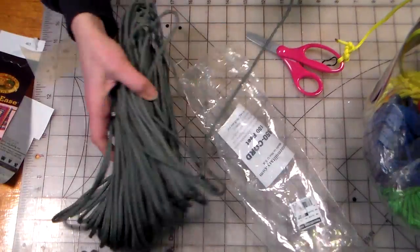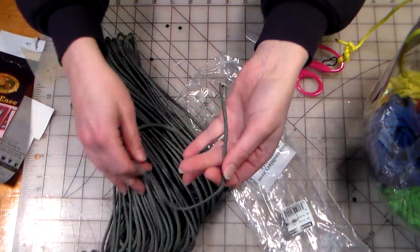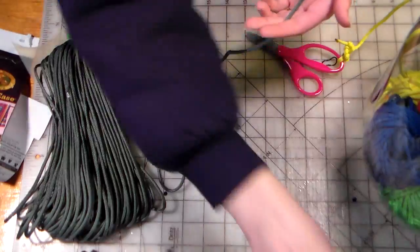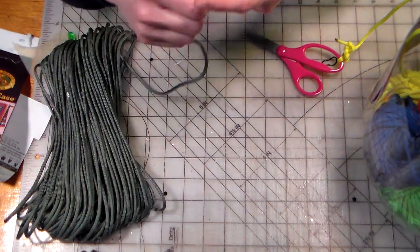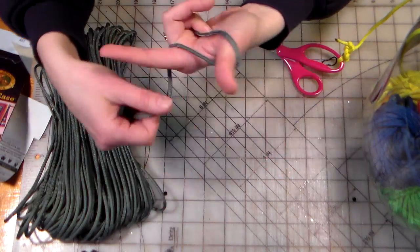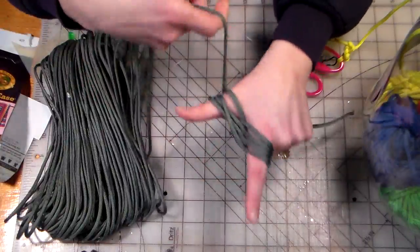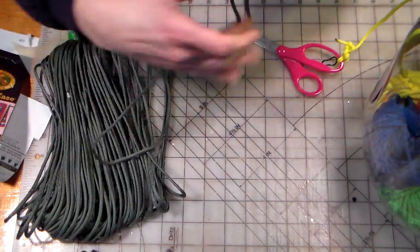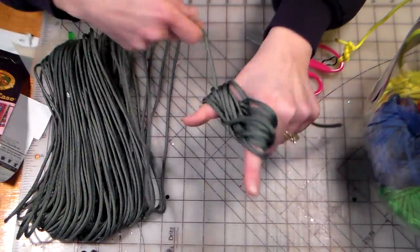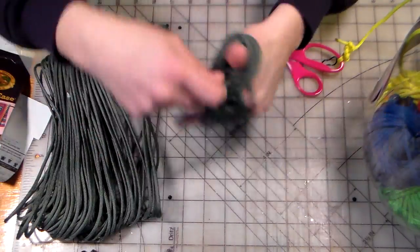So what I usually do is actually drop it on the floor so I can kind of de-kink it, but I'm going to show you this technique really quick to make a center pull ball for your cord. What you want to do is just wrap the cord in a figure eight around your fingers a bunch of times, just around your thumb and first finger.